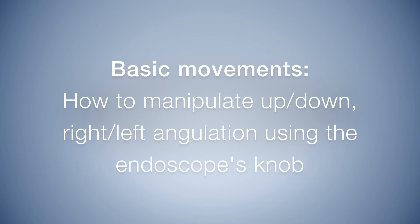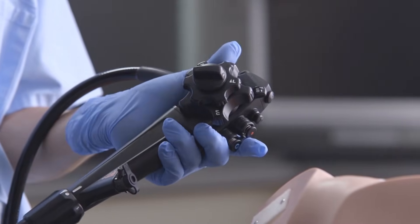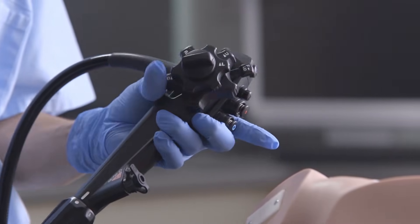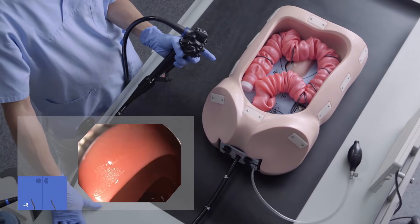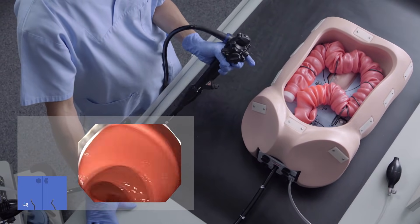Right way to control the angulation. Use the first joint of your thumb to control the up and down angulation knob. Use the tip of your thumb to control the right and left angulation knob.